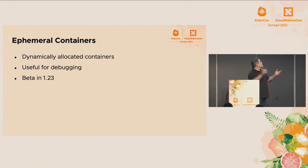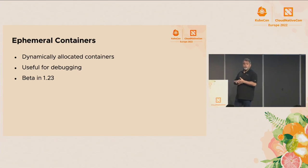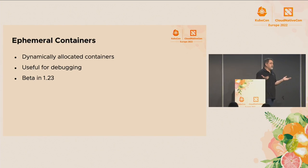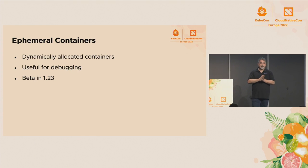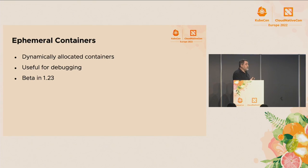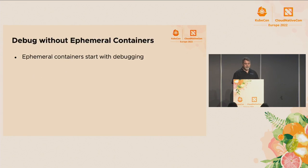Now you're all set up. Ephemeral containers are new — they're beta in Kubernetes 1.23. This means if you install Kubernetes 1.23, they will be enabled by default, so you won't have to set any feature gates. All of the platforms, as far as I know, have 1.23 on their edge release, so if you want to play around with ephemeral containers on something like GKE, either it will be installed by default or you can find it in the edge releases.